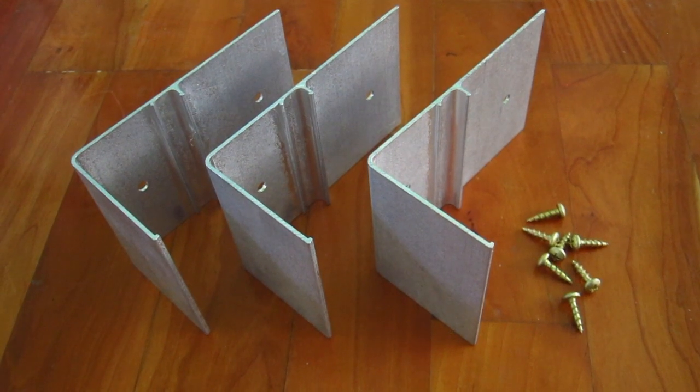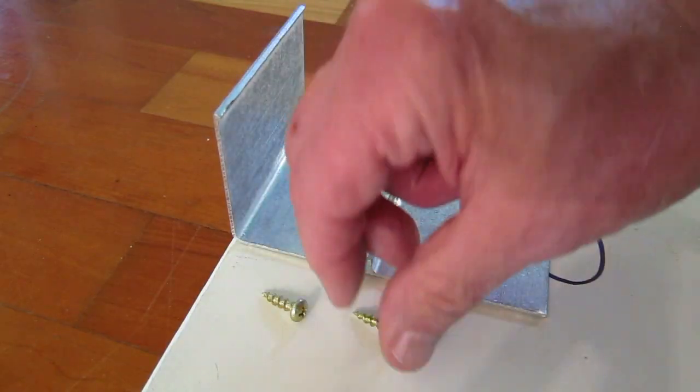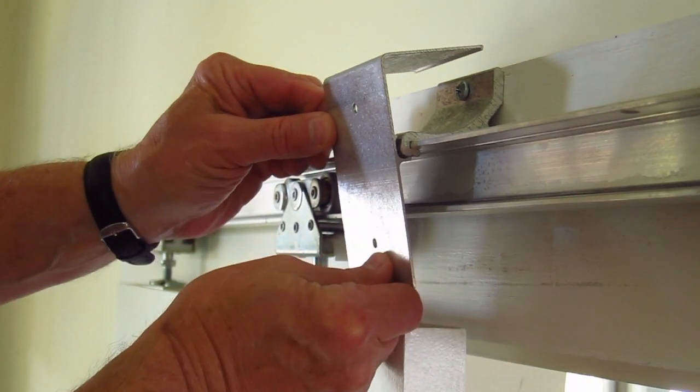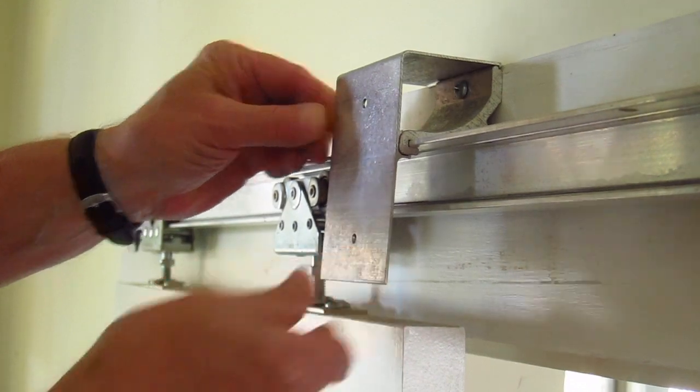The fascia brackets are ingenious and easy to work with. Once you attach the L brackets to your fascia material, they simply snap into place on the Johnson Hardware wall-mount door hardware.